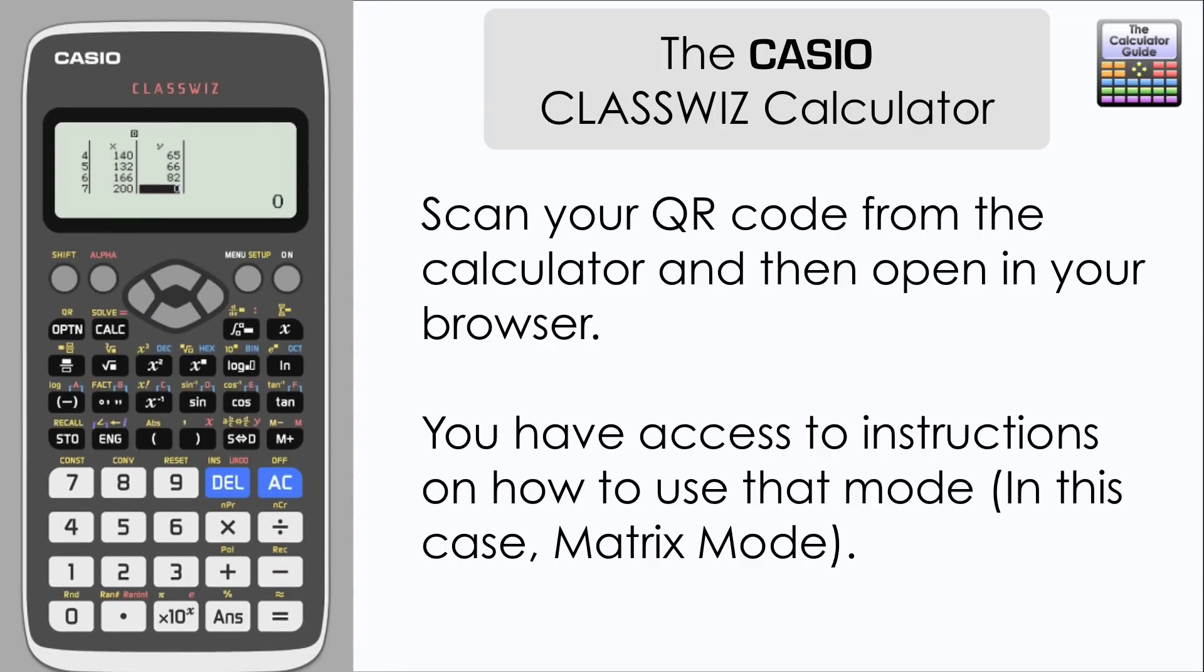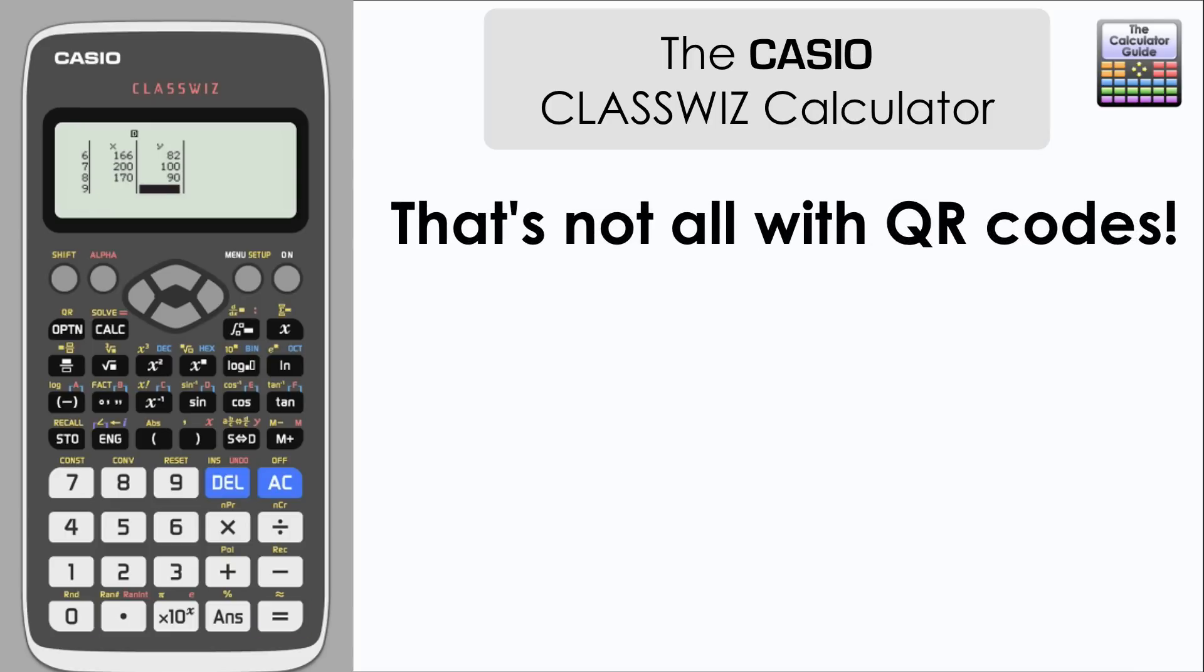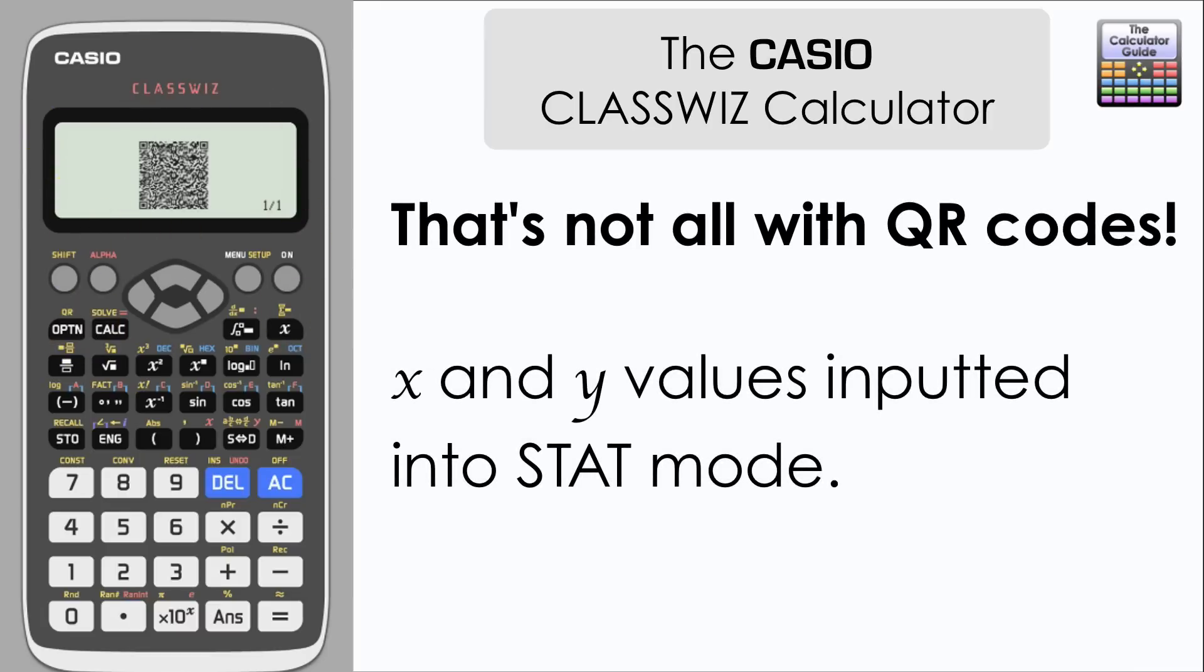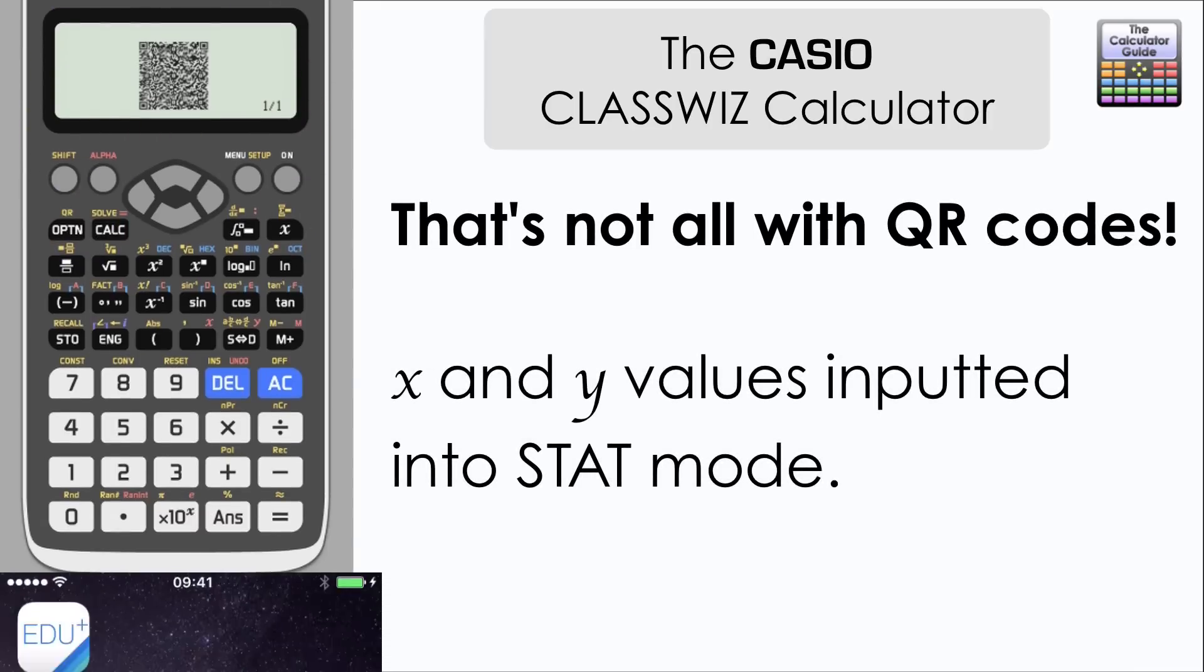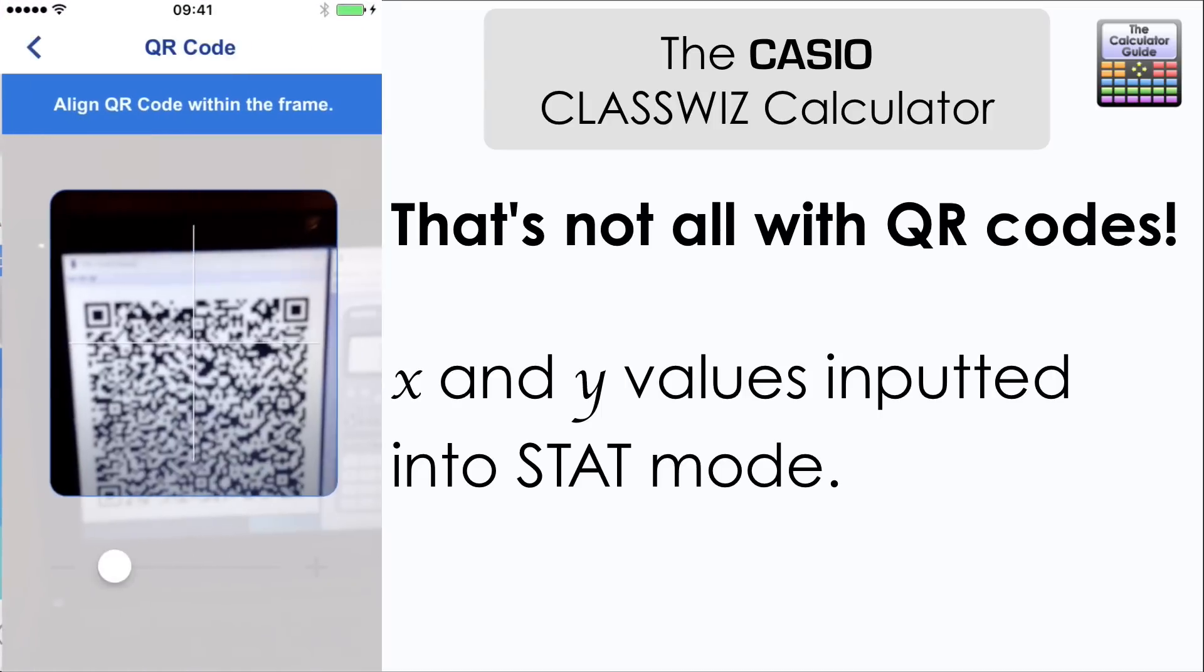Let's pop back to the calculator because that's not all with QR codes. Now I've inputted some data. X and Y bivariate data into stat mode. And I'm just producing a QR code related to that. So if I get the mobile device again. Click on the EduPlus app. And I'm going to scan in the QR code for the stat mode information.